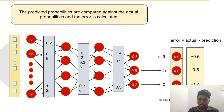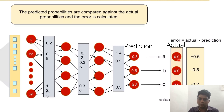We have to minimize the loss function. The actual values are 0.9, 0.0, and 0.0, because we are giving A as input so the maximum probability should be for A only. To predict the error, we calculate the difference between the actual and predicted values: for A it is 0.9 minus 0.3 = +0.6; for B it is 0 minus 0.5 = −0.5; and for C it is 0 minus 0.2 = −0.2.